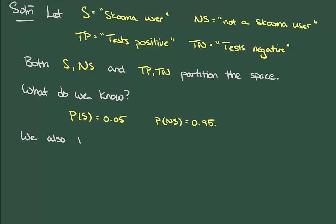The other stat we know is the accuracy of the test. Knowing that the test accurately identifies users 95% of the time says that the probability of testing positive given that you use skooma is 0.95. Accurately identifying non-users 90% of the time says that the probability of testing negative given that you don't use is 0.90. From this, we can determine the corresponding complementary probabilities.